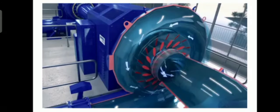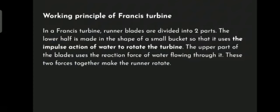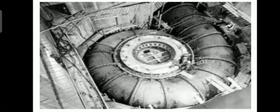Working principle of Francis turbine: the Francis turbine runner blades are divided into two parts. The lower half is made in the shape of small buckets, which uses the impulse action of water to rotate the turbine. The upper part uses the reaction force of water flowing through it. These two forces together make the runner rotate.